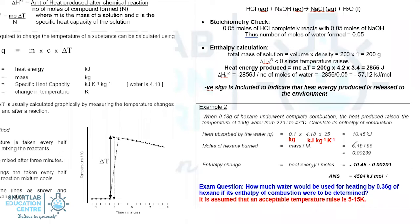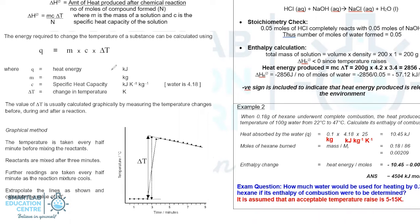Finally, in this type of calculation, the typical mistake that students make is when they wrongly identify M as the mass of the reactants. So in the earlier example, you would be totally incorrect if you take mass as 100 grams of water plus 0.18 grams of hexane.